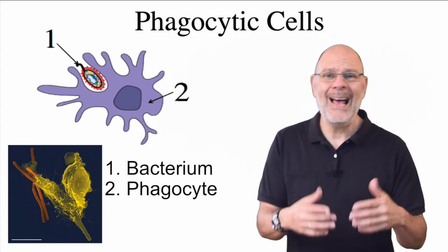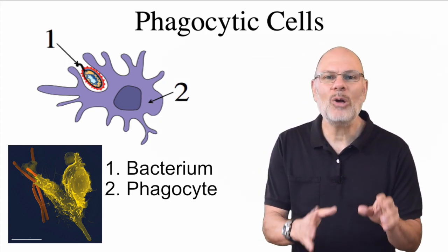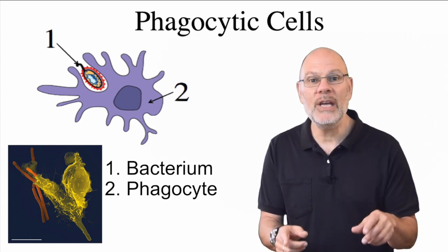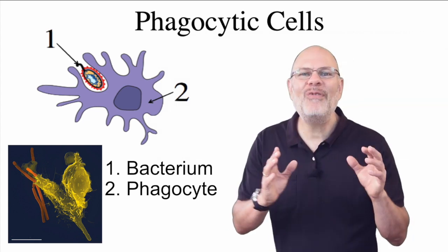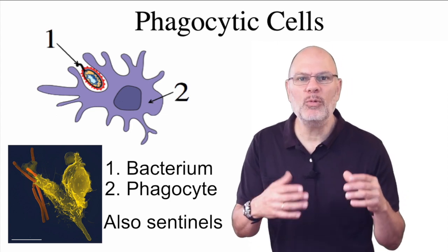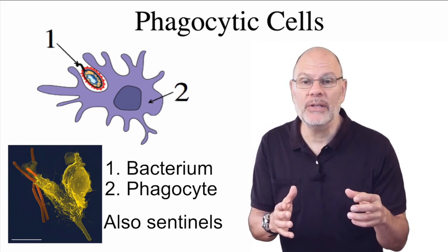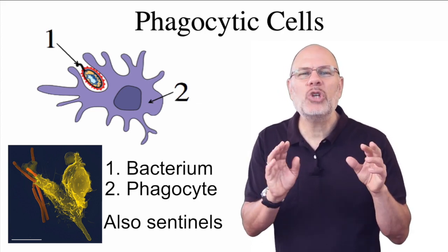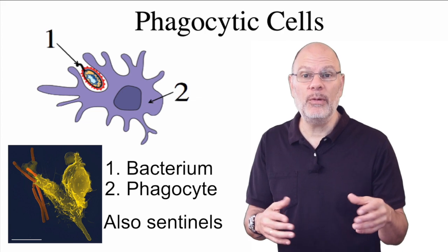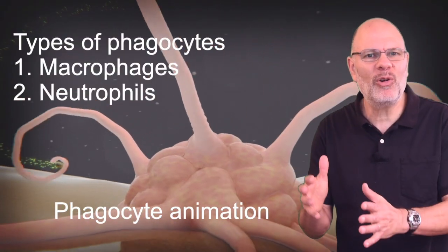Phagocytes are a type of white blood cell, as opposed to red blood cells that carry oxygen. White blood cells are also called leukocytes. Not all white blood cells are phagocytes. Phagocytic cells go around swallowing up other invading cells — here you see a bacterial cell being phagocytized. These phagocytic cells are not only defenders, they're also sentinels — like guards on a watchtower — they sound the alarm in response to an invasion and communicate to cells that mobilize the specific responses. How do these cells know what to attack? It's all by touch and feel. Phagocytes use receptors on their membranes to feel for molecules associated with bacteria and other pathogens, and when they feel those molecules, they attack. Some names of these phagocytic cells are macrophages and neutrophils.